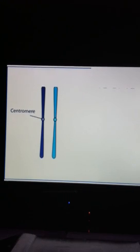Here we have two chromosomes. These chromosomes are unduplicated, the kind you would find in the G1 phase of the cell cycle.